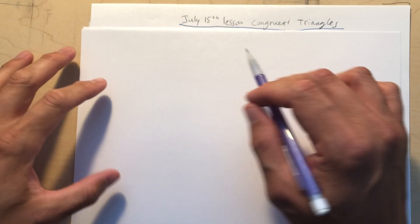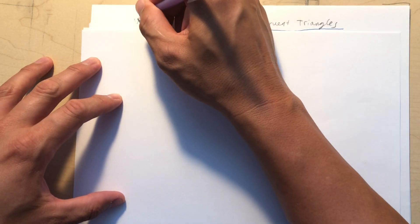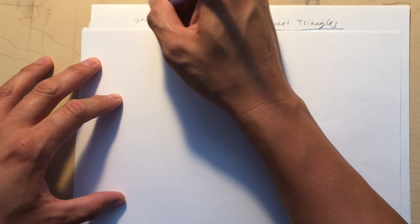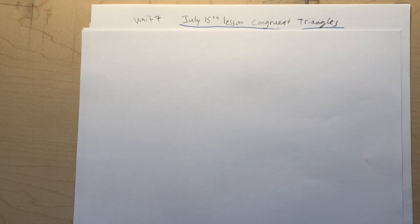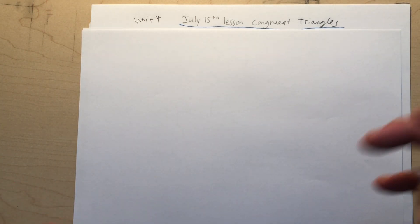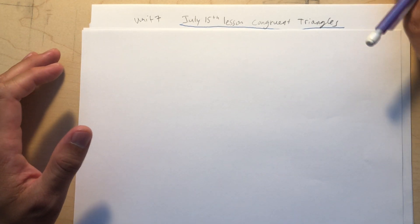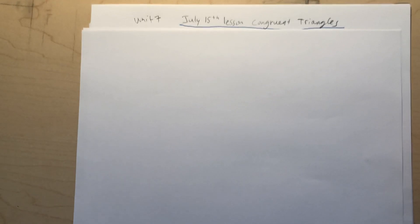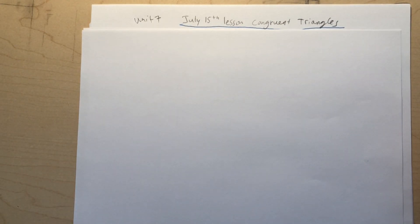Hello students, welcome to the July 15th lesson on congruent triangles. This is Unit 7, which is about flowchart proofs and proving congruence. It's super important — it teaches you a lot and makes you a better thinker. Let's go ahead and get started.